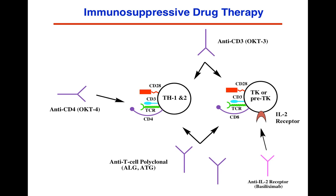The most recent antibody-based approach is basiliximab, an anti-IL-2 receptor antibody which binds to the IL-2 receptor and blocks it. This essentially suppresses the IL-2 receptor, suppressing the ability of IL-2 to cause proliferation. These are a variety of ways in which antibodies to cell surface receptors can be used to modulate the immune response.